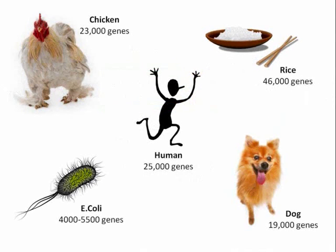From the Human Genome Project, it was discovered that we have 25,000 genes — much less than previously expected. While certain bacteria possess only around 500 genes, some species smaller than our cells have more than we do. A surprising example is a variety of rice plant, which possesses around 46,000 genes. This clearly suggests there is a much smaller correlation between intelligence and gene number than originally thought.